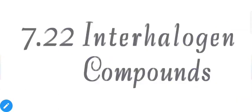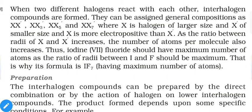Next are interhalogen compounds — formed when two different halogen atoms react with each other. They are assigned a general composition as XX', XX'3, XX'5, and XX'7, where X is the larger-sized halogen atom and X' is the smaller-sized halogen atom. For example, X can be Cl with X' as fluorine; if X is bromine, X' can be chlorine or fluorine; if X is iodine, X' can be bromine, chlorine, or fluorine.